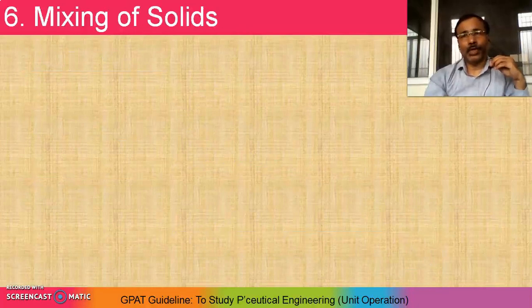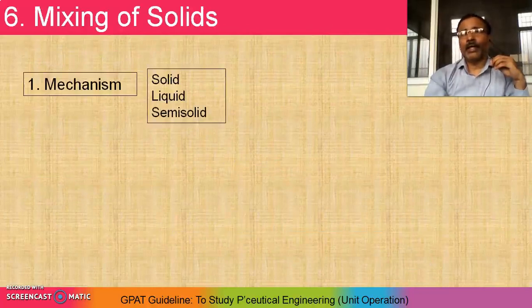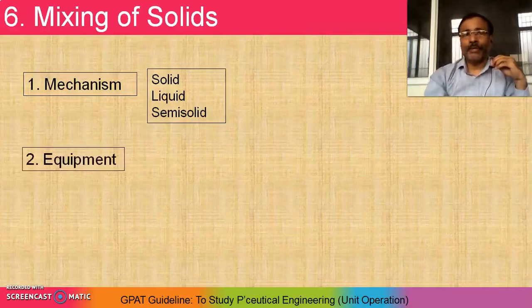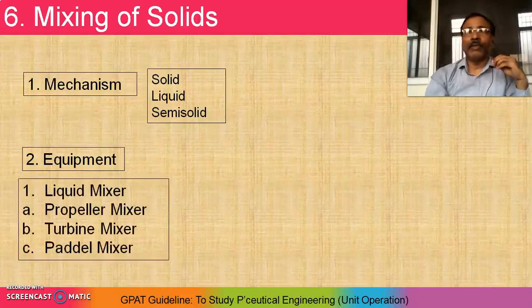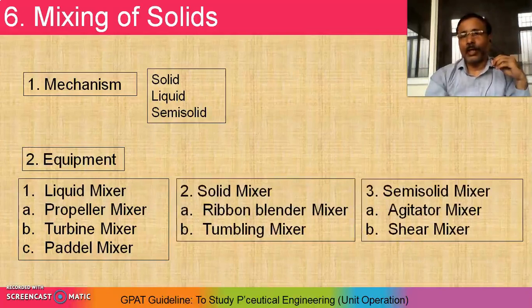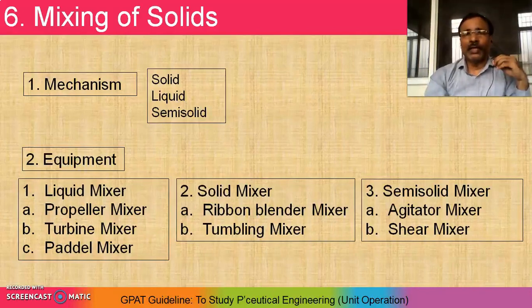Sixth chapter is mixing of solid. First, check out the mechanisms involved in solid, liquid, and semi-solid mixing — each has a different mechanism. Equipment varies accordingly: liquid mixers include propeller mixer, turbine mixer, and paddle mixer; solid mixers include ribbon blender and tumbling mixer; semi-solid mixers include agitator mixer and shear mixer. Check out the principle and specific application of each.